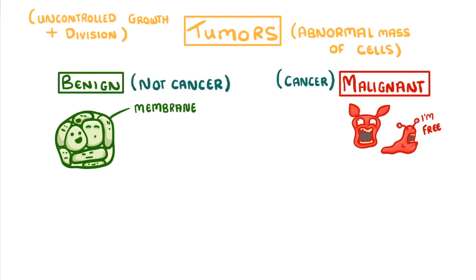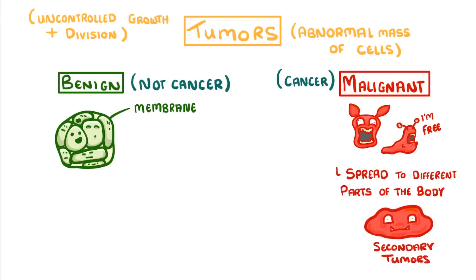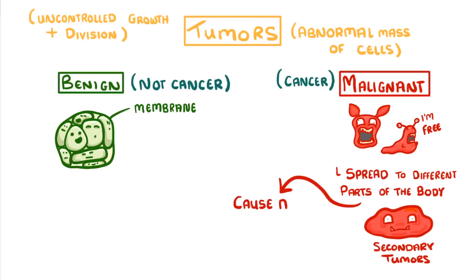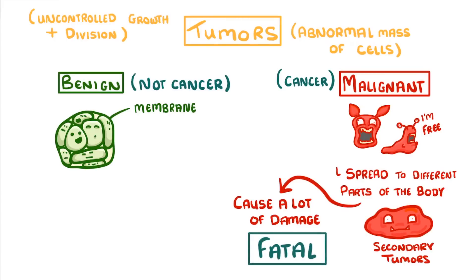Malignant tumours, on the other hand, don't stay in one place. They're able to invade other tissues and spread to different parts of the body, where they can form new secondary tumours. This process can cause a lot of damage to our body, making malignant tumours far more dangerous and potentially fatal, which is why we classify them as cancer.